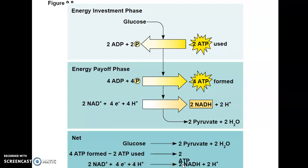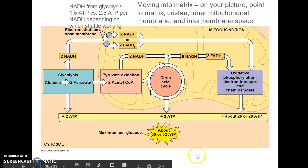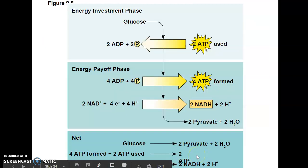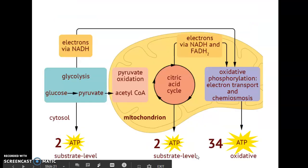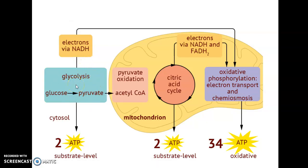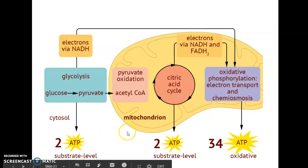Finally, going back to our overview diagram, you need to understand that glycolysis is happening in the cytoplasm, not in the mitochondria. That's it for glycolysis — make sure you pick up with the pyruvate oxidation video next.